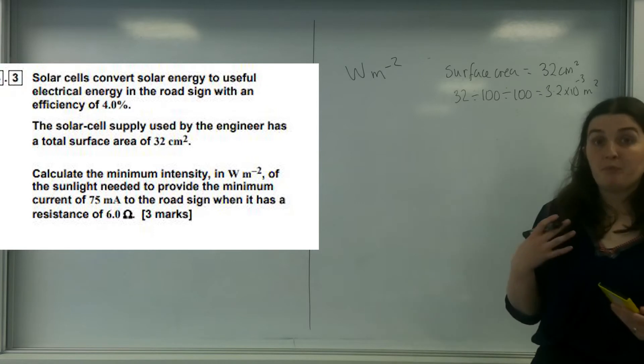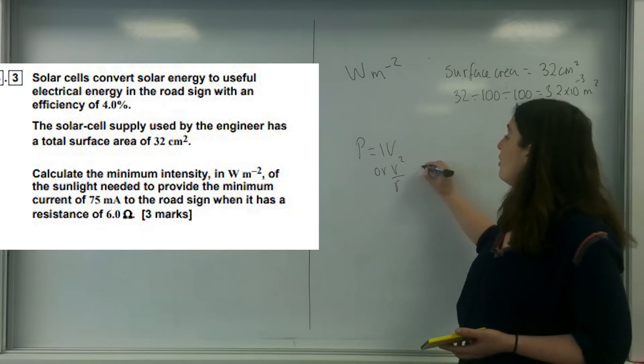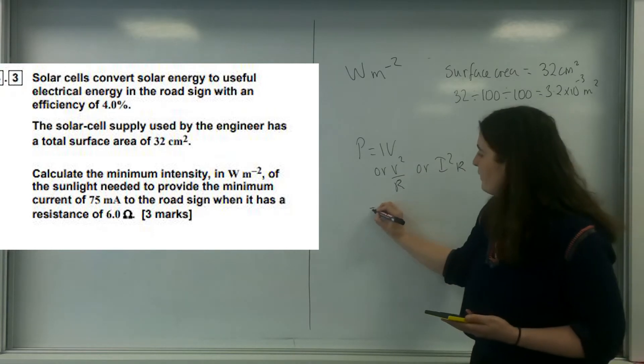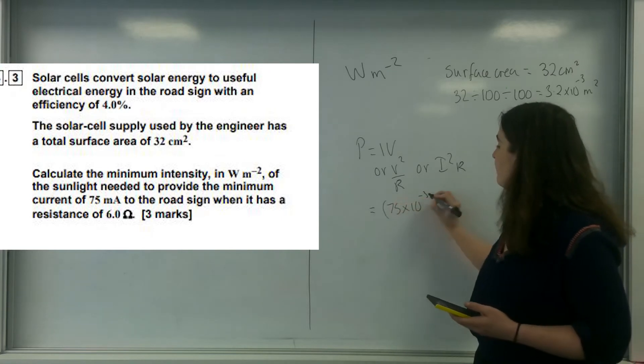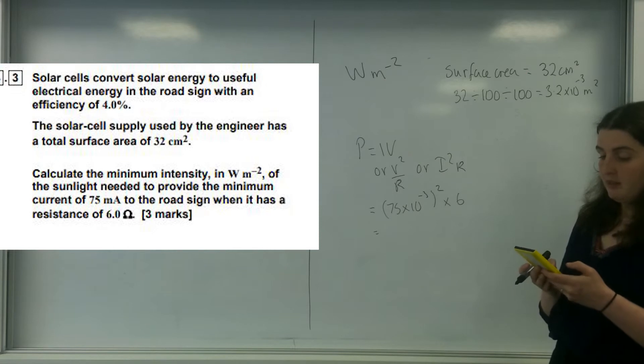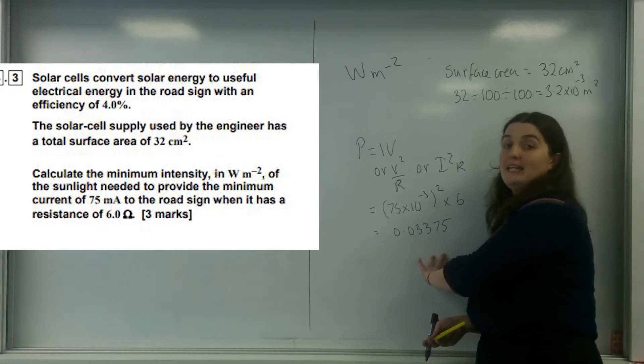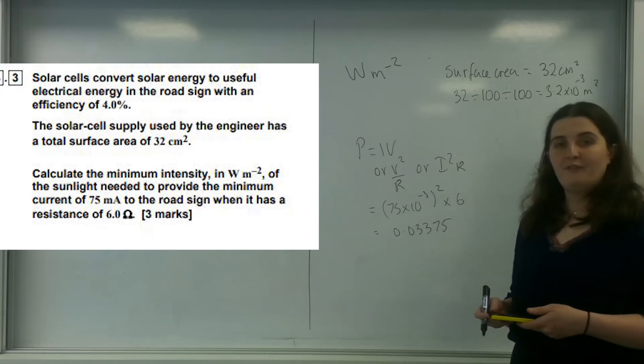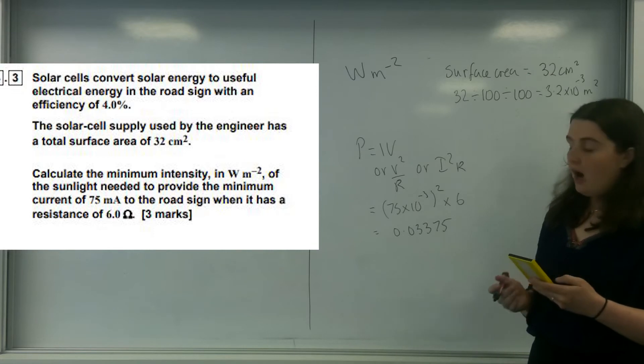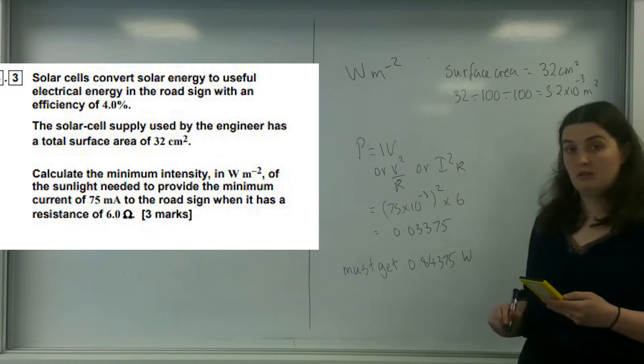What's the wattage? I know power is IV, or V squared over R, or I squared R. I've got the current and the resistance, so I'm going to use that one. I've got 75 times 10 to the minus 3 squared, times by my resistance, which is 6. I get 0.03375. Now I know this is 4% efficient. So, this must be 4% of whatever I get. If I divide that by 4 and times that by 100, I know I must get at least 0.84375 watts.